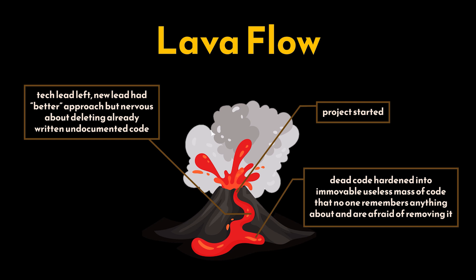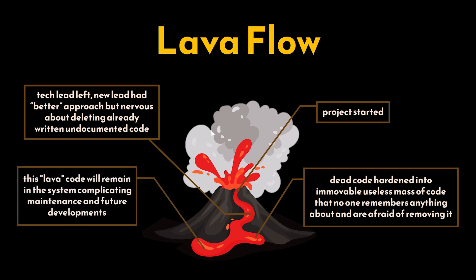This anti-pattern is characterized by the lava-like flows of previous versions of the application, which have now hardened into immovable, generally useless mass of code that no one can remember much, if anything, about. This lava code remains in the system, complicating maintenance and future development, much like how cold lava hardens and obstructs pathways.